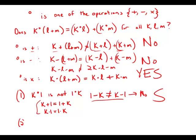Statement number two tells us outright that circle is subtraction. If we know circle is subtraction, we know the equation is not always true. Because we can give a definitive answer to the question with no doubt, we have sufficient information. Statement two is sufficient.